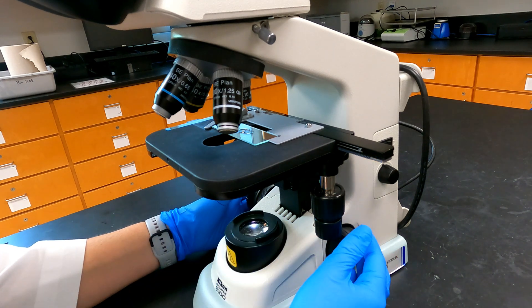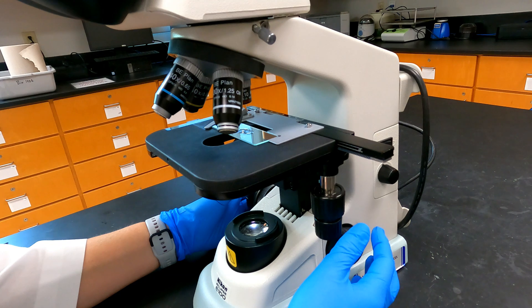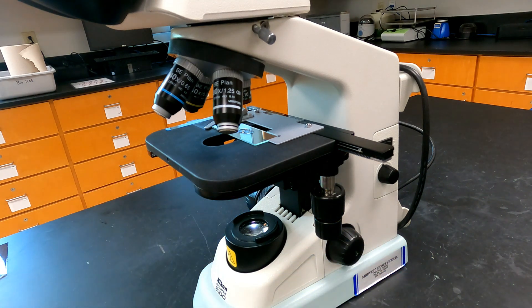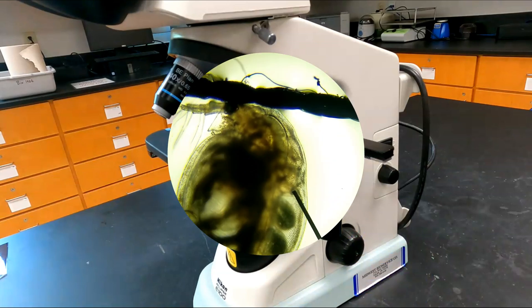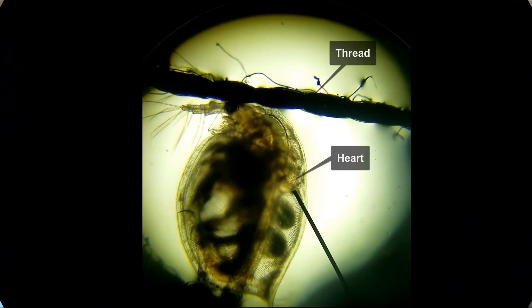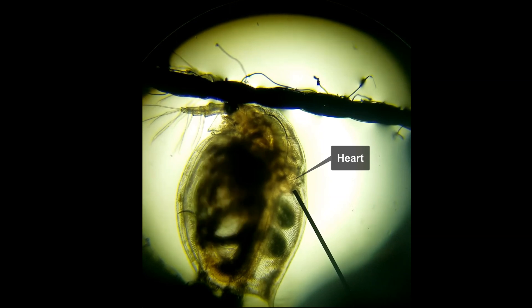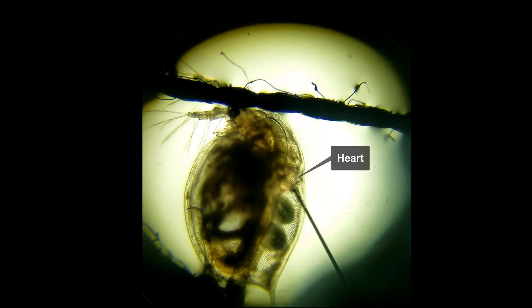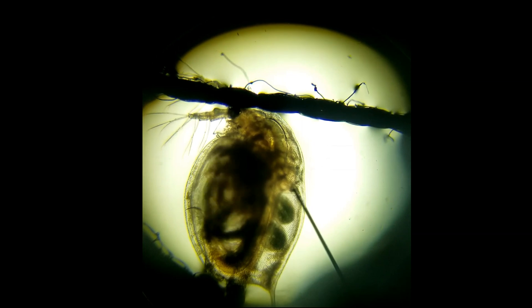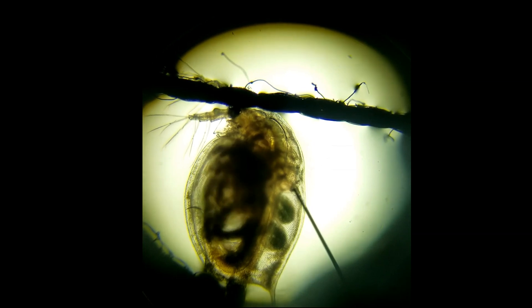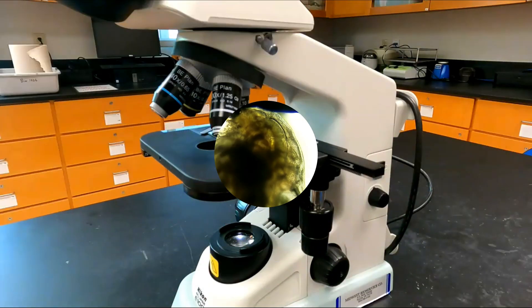Once you can clearly see the Daphnia under the microscope, locate its compound eye, antenna, and most importantly the beating heart. You may view your Daphnia at either 4x or 10x magnification, whichever helps you to count the heartbeats more easily. Follow the protocol to count the heartbeats for 15 seconds three times and then calculate the baseline heart rate per minute.